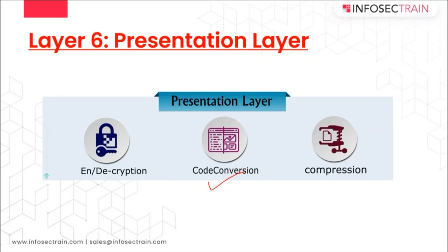For example, if you are sending a message 'ABCD', the Presentation Layer will first change the format of ABCD, then encrypt ABCD, and then even compress ABCD into smaller characters, so that the overall size of data is reduced and it can be transferred faster from one part to another. So what it starts with is translation — also known as code conversion.